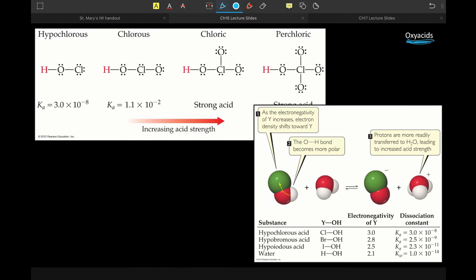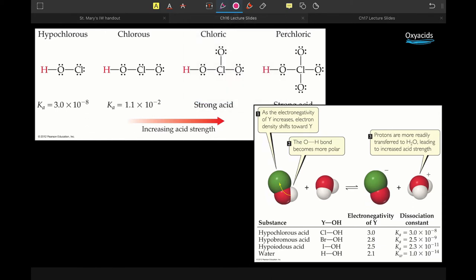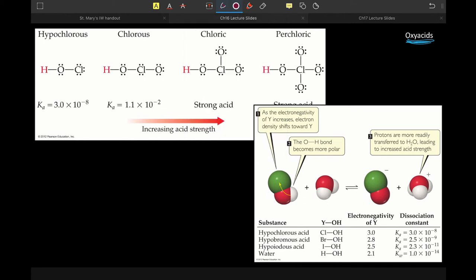So there are two different ways to analyze our oxyacids. If we're given a series of oxyacids like here, let me get a darker color, like here, we're just looking at an oxygen bonded to a hydrogen and that oxygen is bonded to that Y. So really, so when they say OH, that's what they're saying.